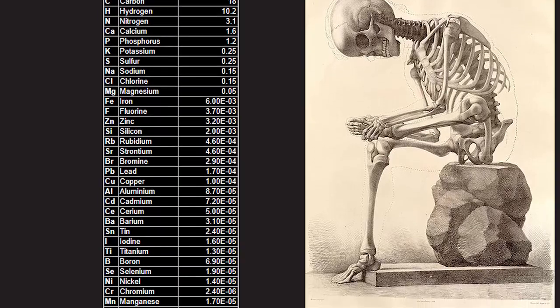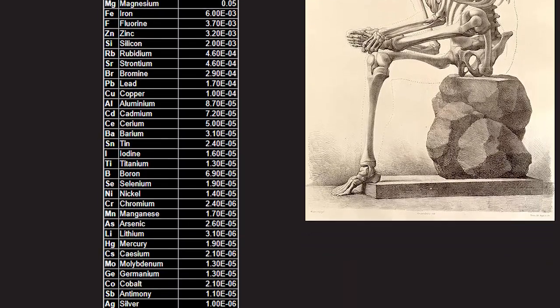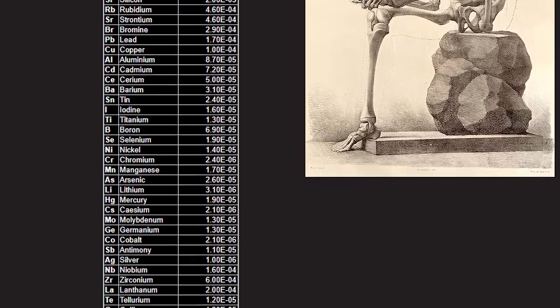A pound is both a unit of weight and a type of currency because for most of human history, things with higher weight were considered higher value. The average weight of an adult human is 137 pounds. But how much is it worth? Well, if you added up all the carbon, oxygen, hydrogen, iron, and other elements in you, it would only add up to about $160.